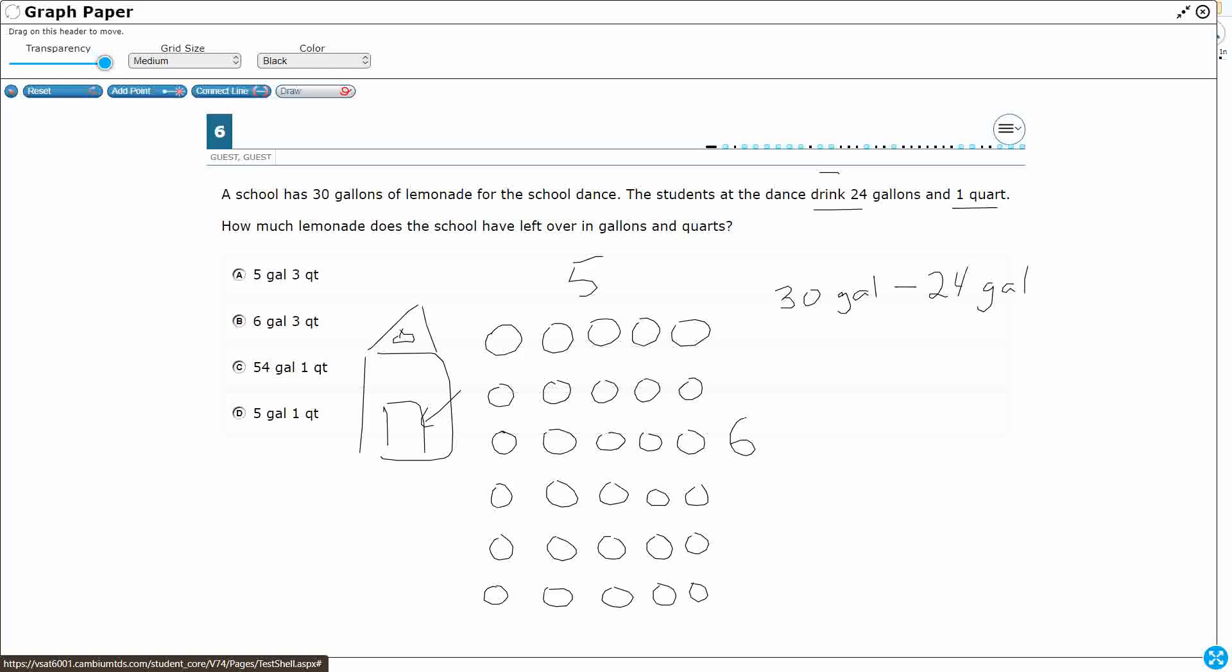They also have that one extra quart. Okay, so 24 gallons, one quart. And it's important, it's not just 30 minus 24, because you have to use the units, because each unit is different sizes. So these are all gallons right here. Let's write that so we can remember what we have here. I can easily take away the 24 gallons. So let's take away 24 gallons.